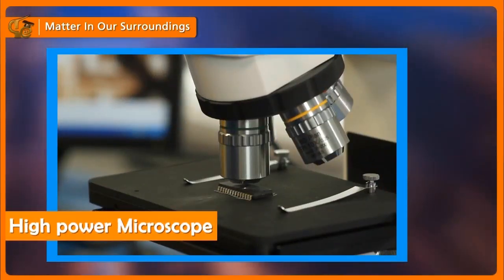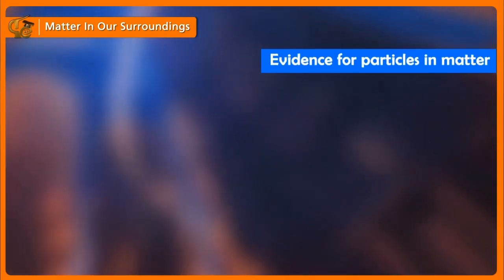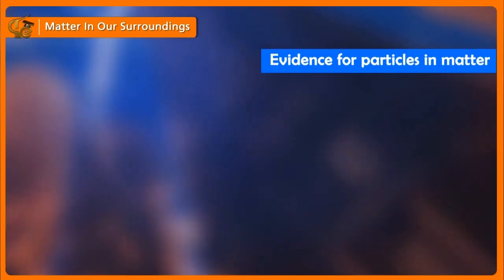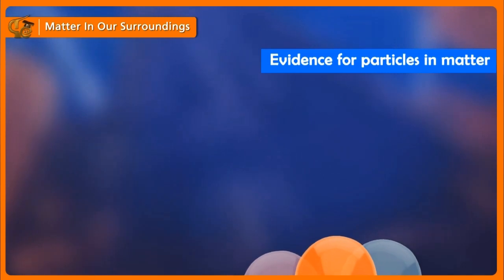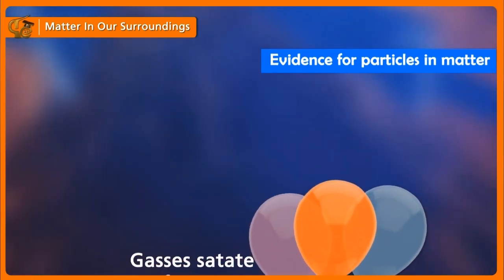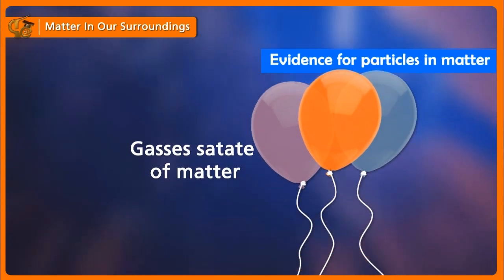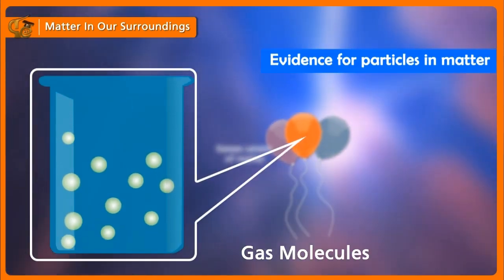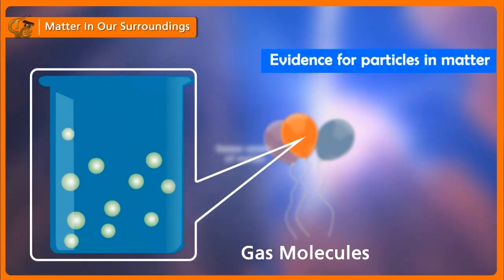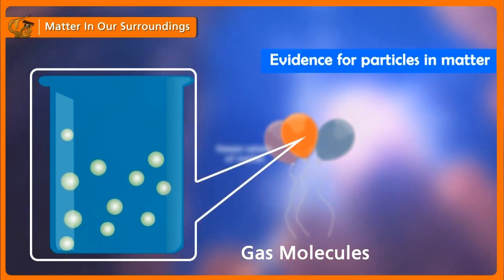Even without seeing them, we have certain evidence which tells us that all things are made of tiny particles. We will now give some of the evidence which clearly shows that all matter is made up of tiny particles. This evidence also shows that the particles which make up matter are constantly moving. Please note that the particles which make up matter are atoms or molecules.